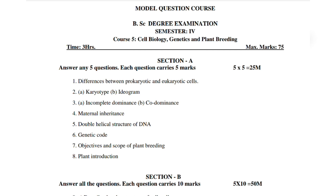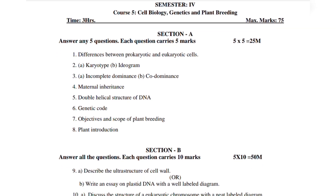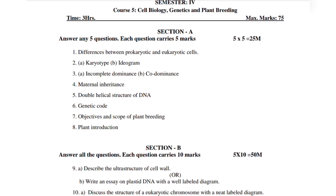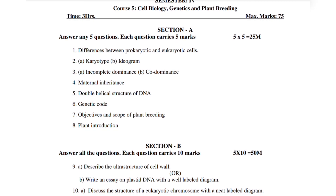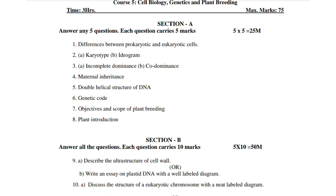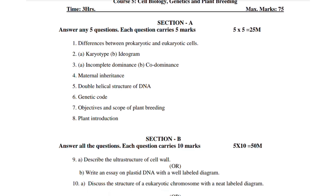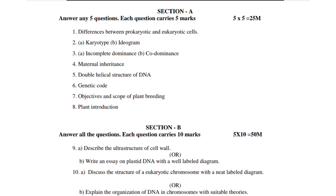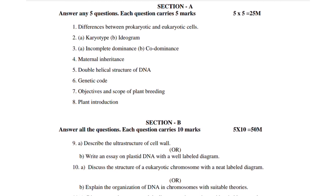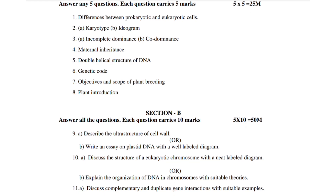For Section B essay questions: 9th (a) describe the ultra structure of cell wall; 9th (b) write an essay on plastid DNA with a well-labeled diagram. 10th (a) discuss the structure of a eukaryotic chromosome with a neat labeled diagram; 10th (b) explain the organization of DNA in chromosomes with suitable theories.